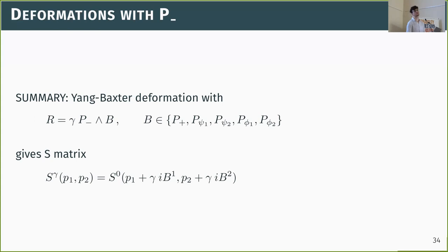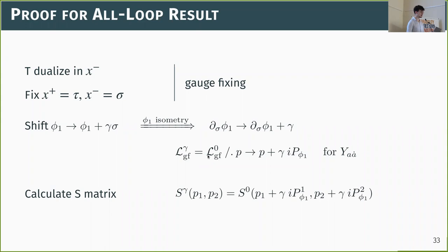Q&A: A question arises about how the all-loop S-matrix result was established — isn't using Feynman diagrams perturbative? The speaker clarifies that rather than computing individual Feynman diagrams, they examined the path integral with the exponential of the action and tracked how the momentum shift carries through at all loop orders at once.